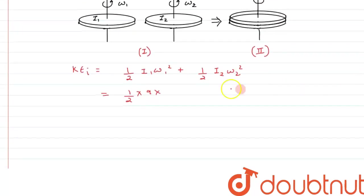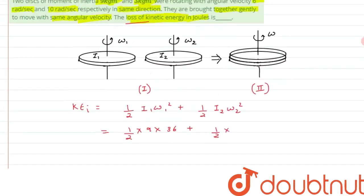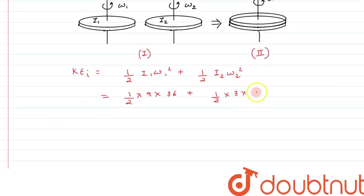So it comes out to 36 plus half into I₂ is given as 3 and this is 10 so 100. From here we can say this value comes out to be 18 into 9, 162 plus 50 into 3, 150 and that comes out to be 312 joules. So this is the initial kinetic energy of the system.